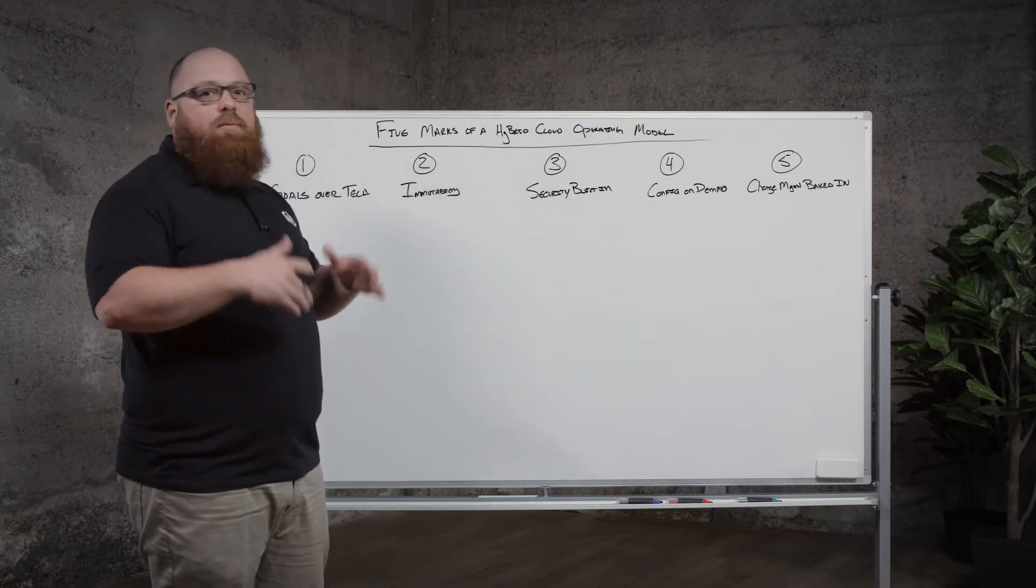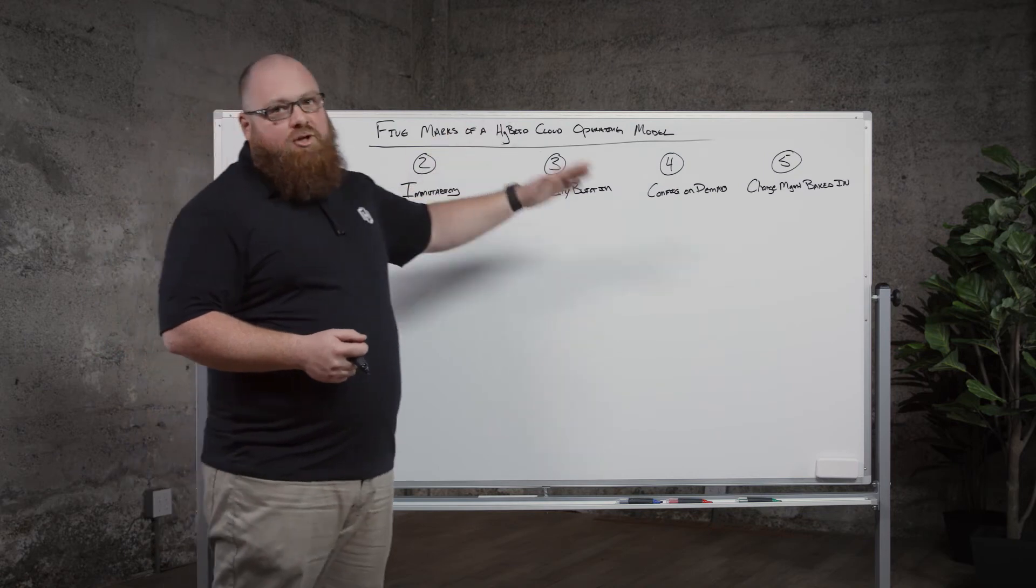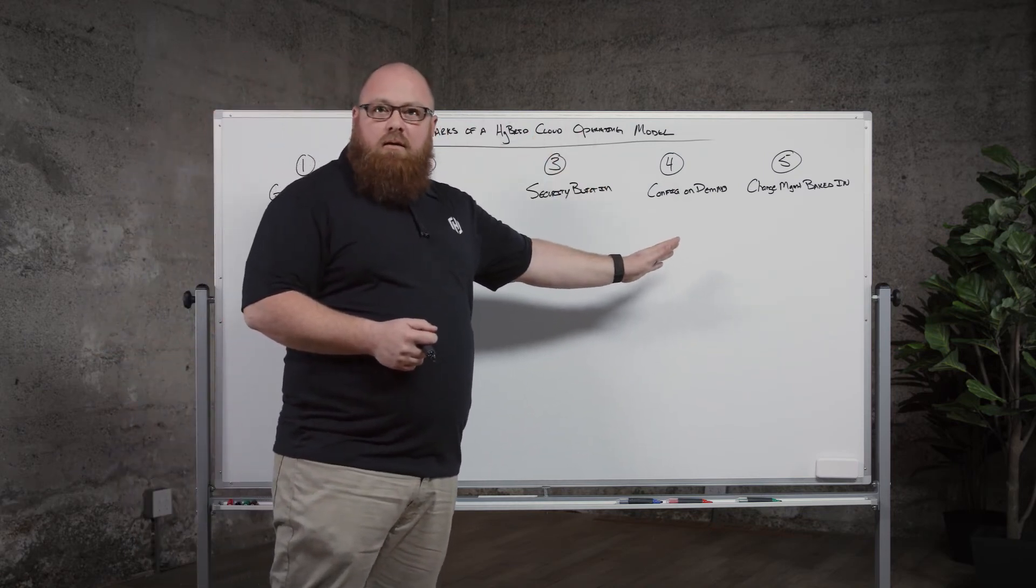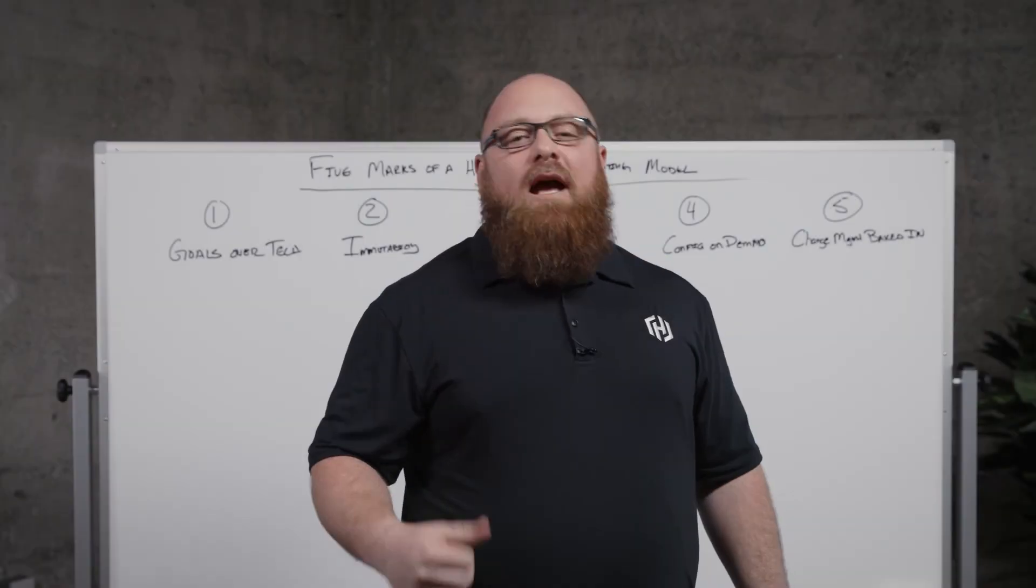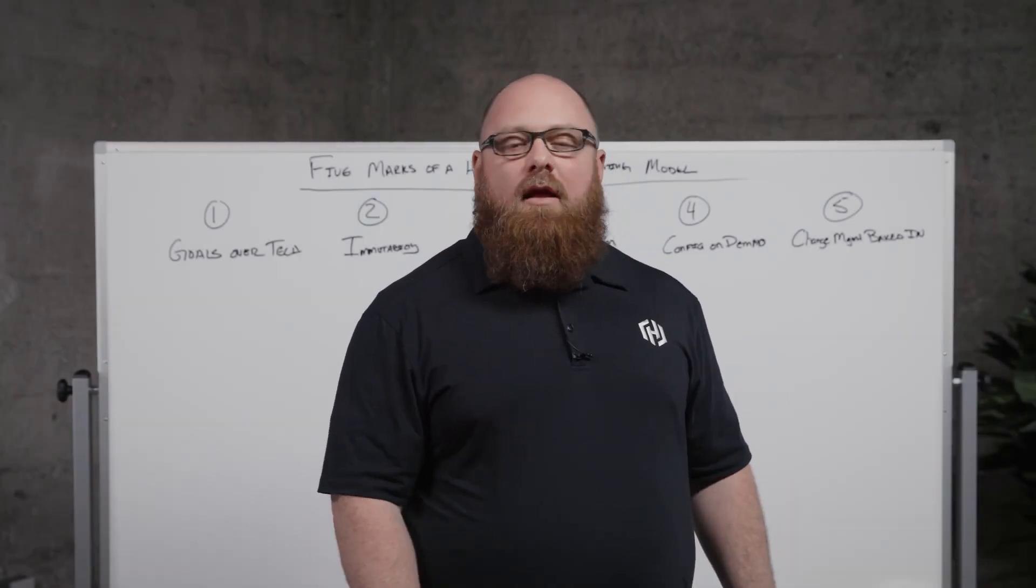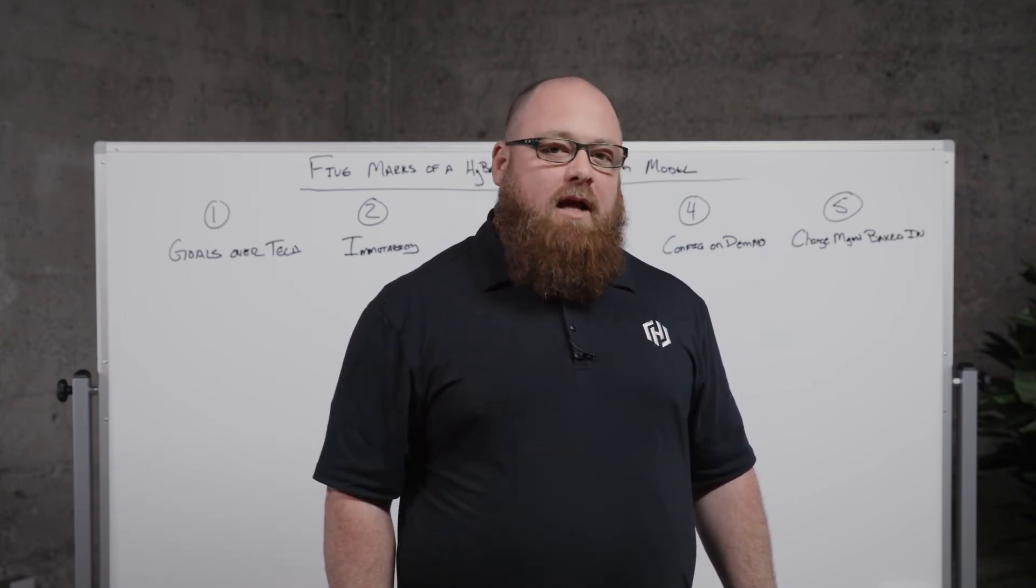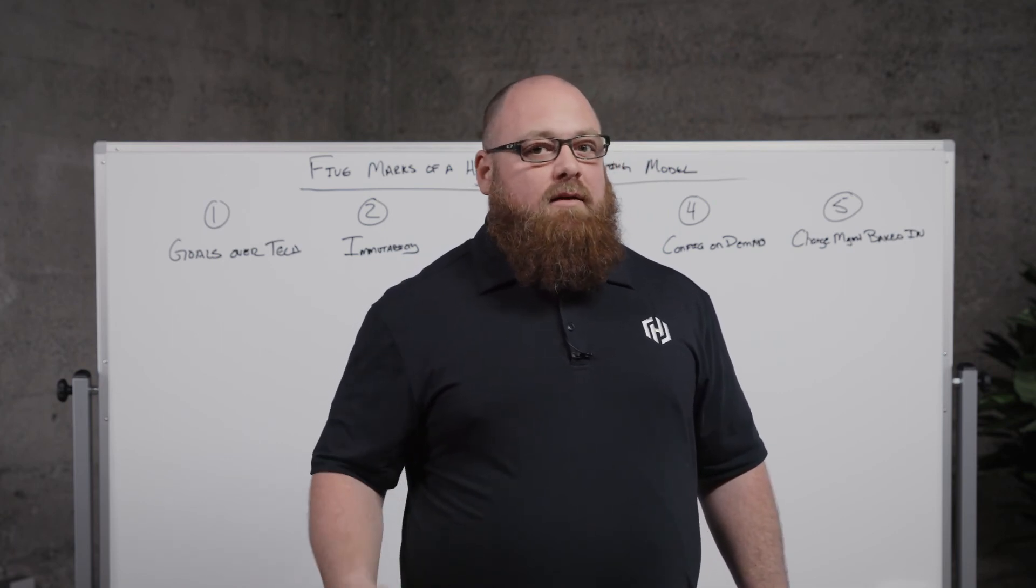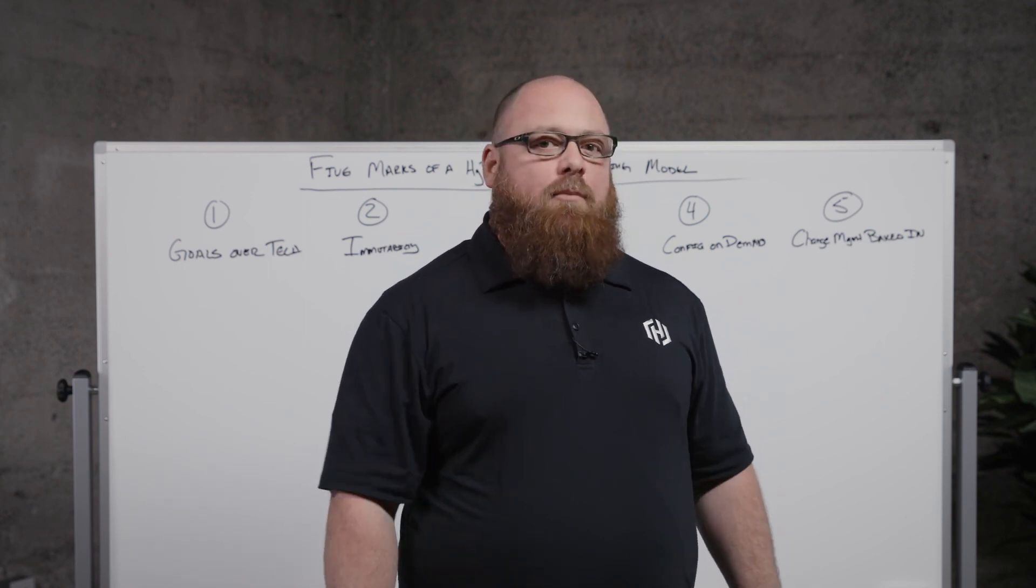This is not something that is going to be an overnight success or something that you're going to push through. This is a transformation where you're going to start in one place and end up changed at the other side. And so use these as guiding principles. So now that you know these five marks of a hybrid cloud operating model, we'd love to help you in those first steps along this journey. Feel free to visit us at hashicorp.com, check out our learn pages, or even go to our blogs to get tips and tricks and reach out to be able to engage with us on how we can help you move forward.